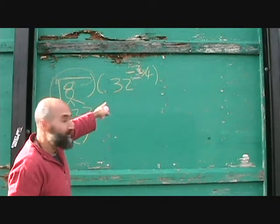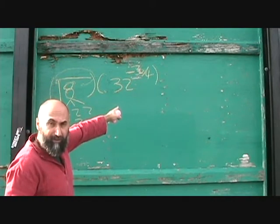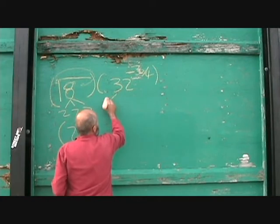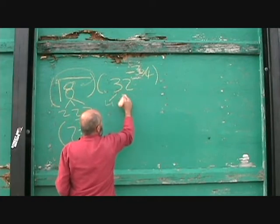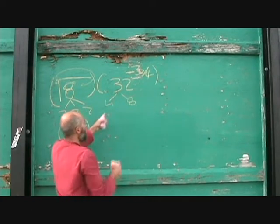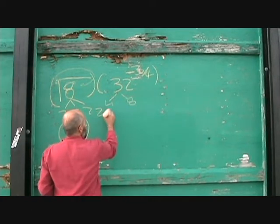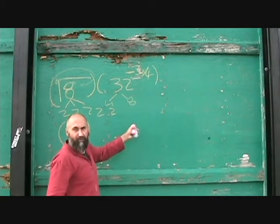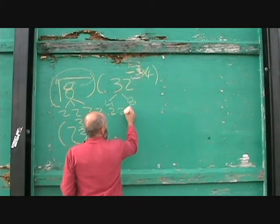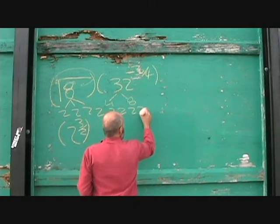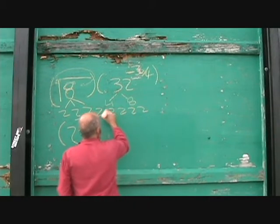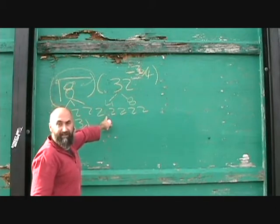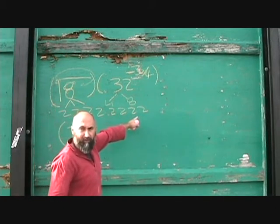Now let's look at 32. We've got to break 32 down to its prime numbers. So 32 becomes 4 times 8, and 4 is 2 times 2, and 8 is 2 times 2 times 2. So 32 is 2 to the power of 5.